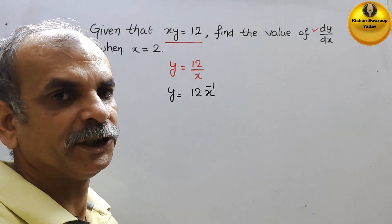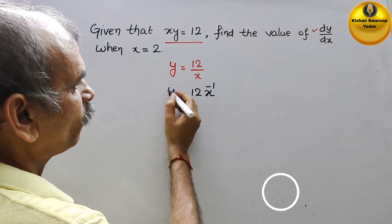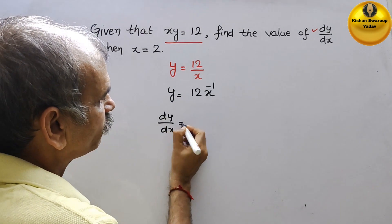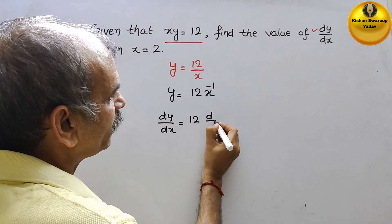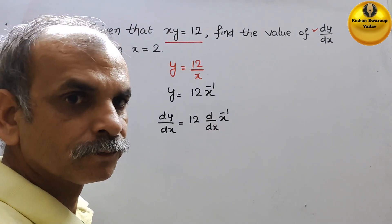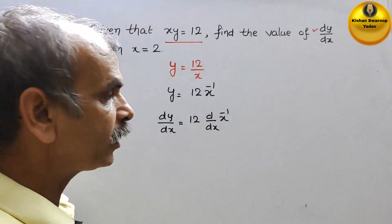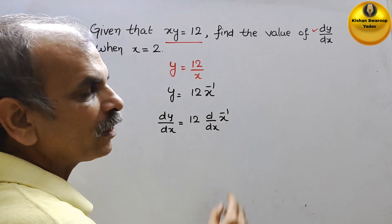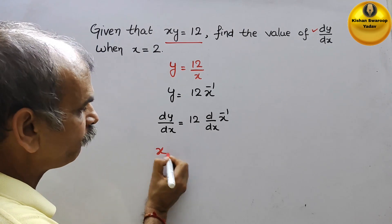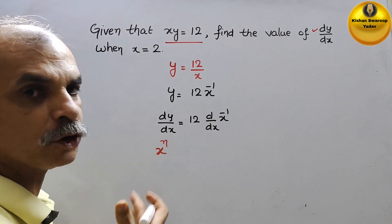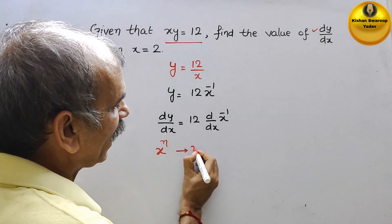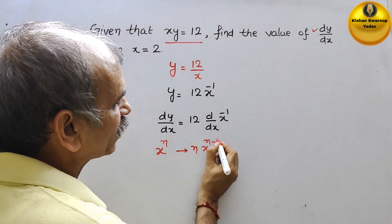Now we will differentiate. If you differentiate, we will get dy by dx is equal to 12 times the derivative of x to the power of minus 1. We will apply the power function rule, which states that if your value is in the form x to the power of n, then if you differentiate you will get n times x to the power of n minus 1.